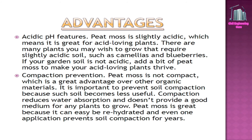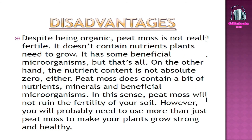Compaction prevention: Peat moss is not compact, which is a great advantage over other organic materials. It is important to prevent soil compaction because compacted soil becomes less useful — it reduces water absorption and doesn't provide a good medium for plants to grow. Peat moss can easily be rehydrated, and even one application prevents soil compaction for years.